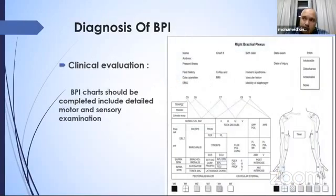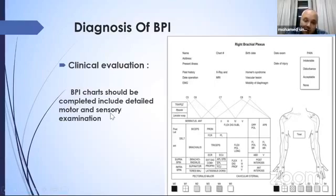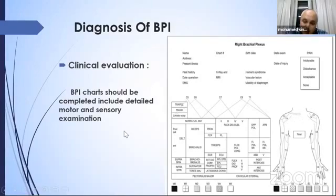Clinical evaluation should include adequate history, mechanism of injury, and thorough neurological examination of the upper limb. The brachial plexus index charts should be completed, including detailed motor and sensory examination of each muscle and each dermatome of the upper limb, front and back.